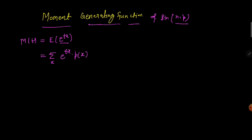Now we know that for the binomial distribution the probability mass function is simply nCx times p to the power x times q to the power n minus x, with x running from 0 to n. We're going to put this value into the equation, so we get the sum from x equals 0 to n of e to the power tx.